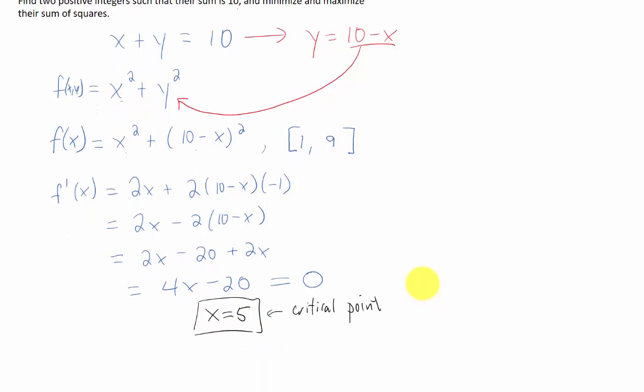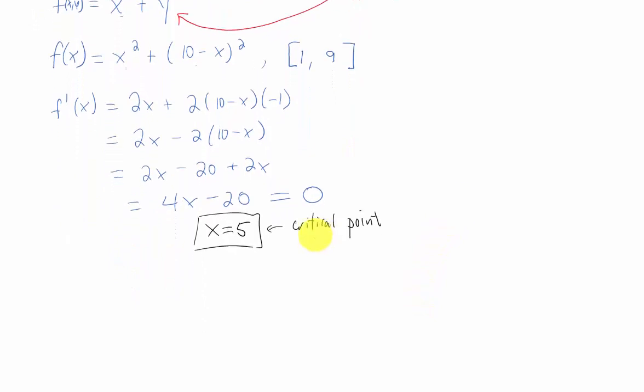Now to find the maximum and minimum values of this function, we just need to plug in the critical point and the two endpoints of our interval. That means let's find f of 1, f of 5, and f of 9.